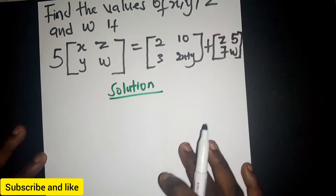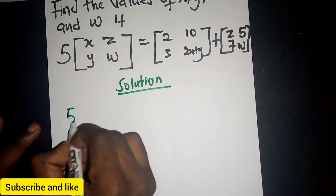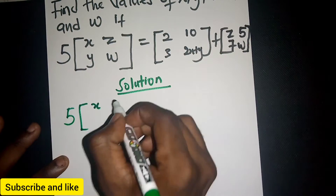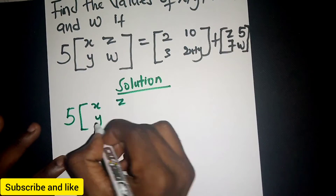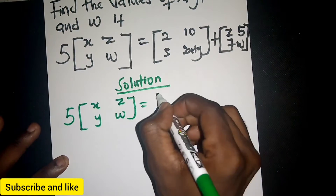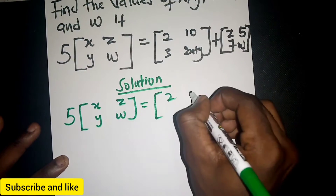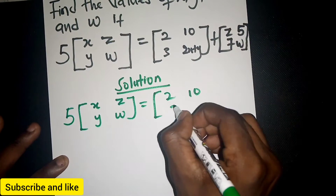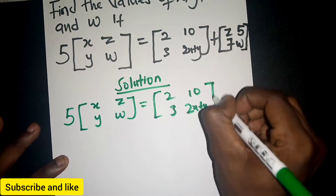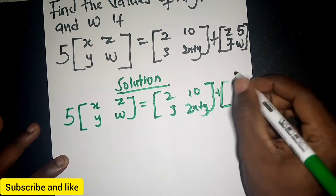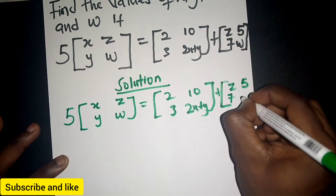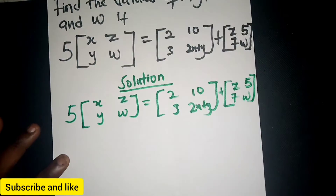We have 5 times the matrix [x, z; y, w] equal to the matrix [2, 10; 3, 2x+y] plus [z, 5; 7, w].